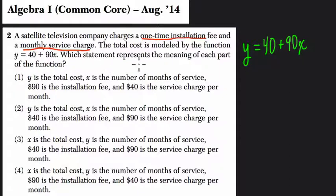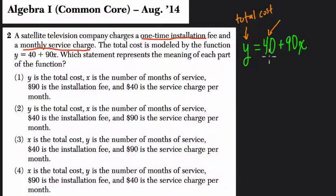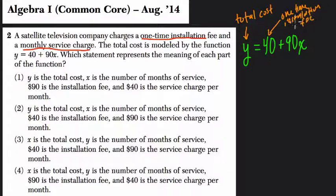Which statement represents the meaning of each part of the function? Let's take this apart and make sense of it. y has to be the output — it's the total cost. To get the total cost, what do these other numbers have to mean? Notice this number 40 is always 40 — it doesn't matter what x is, it's constant. So that must be the one-time installation fee. Then x is a variable that must represent the months that pass by, and 90 must be the cost per month.